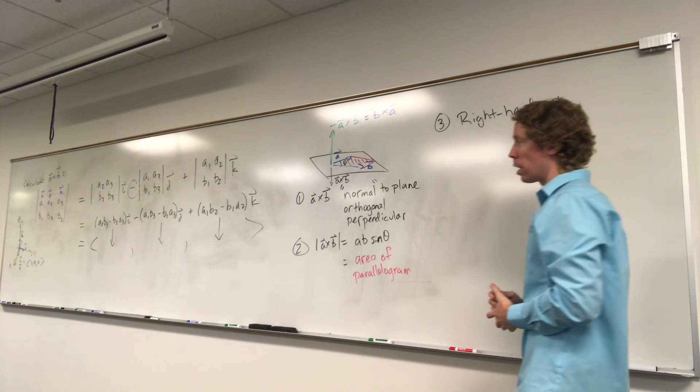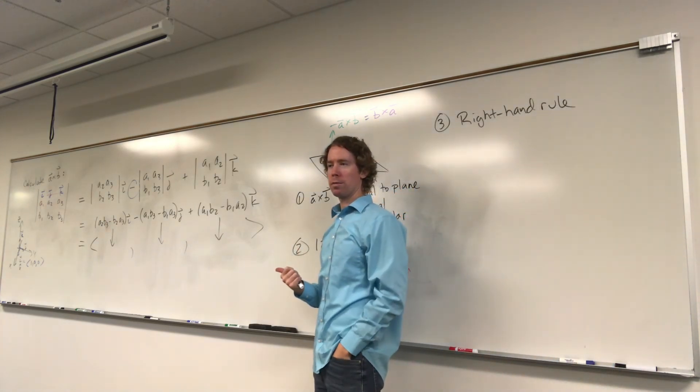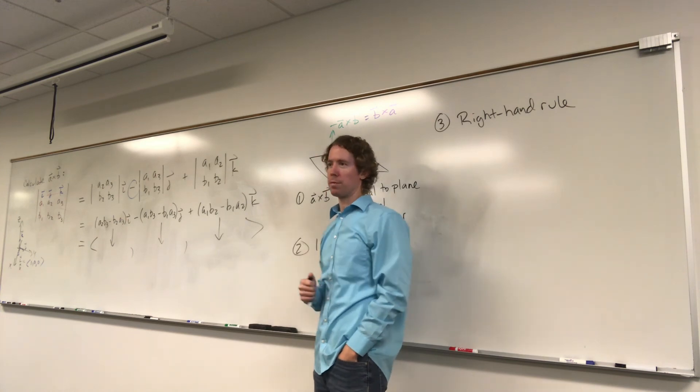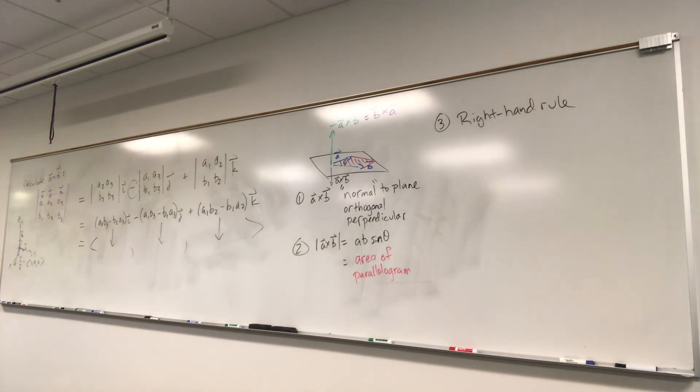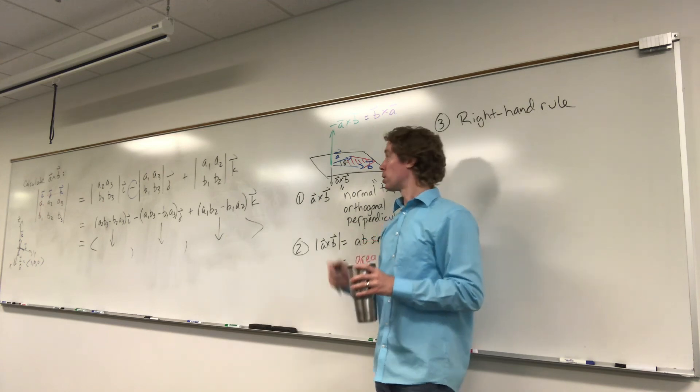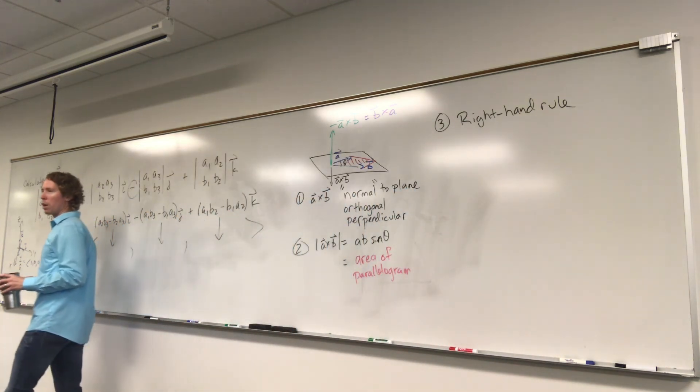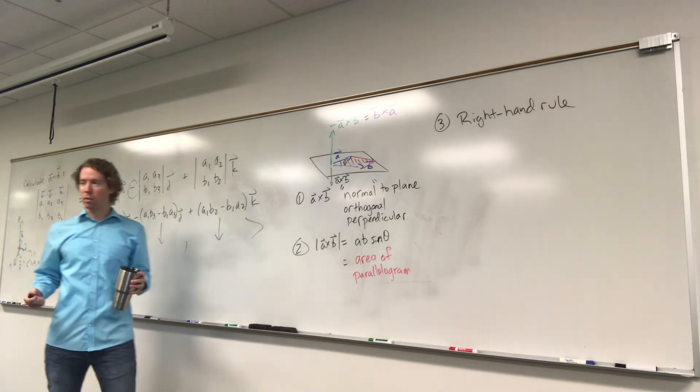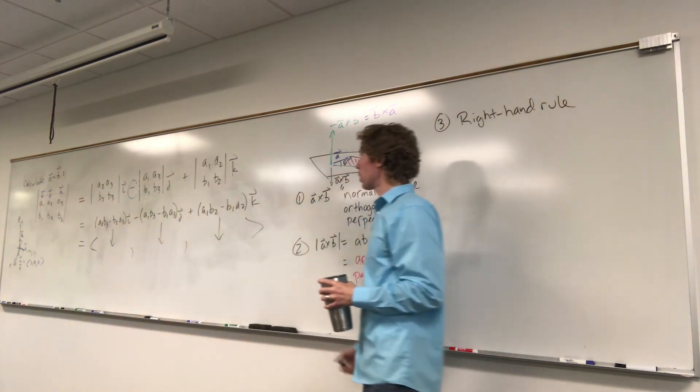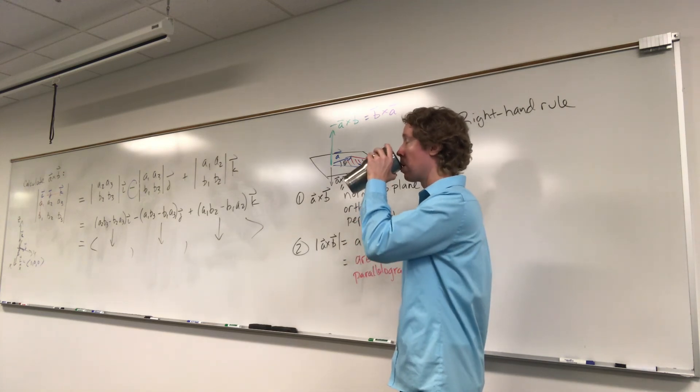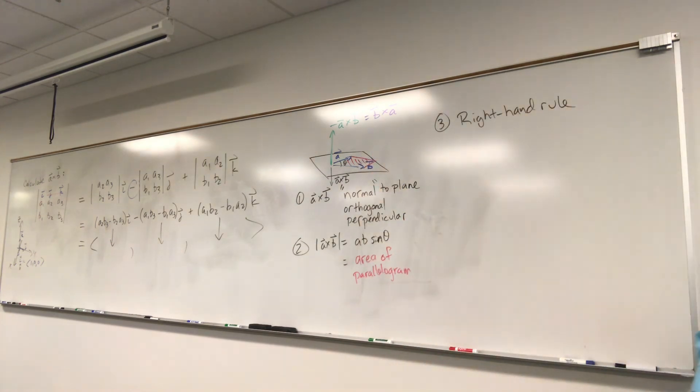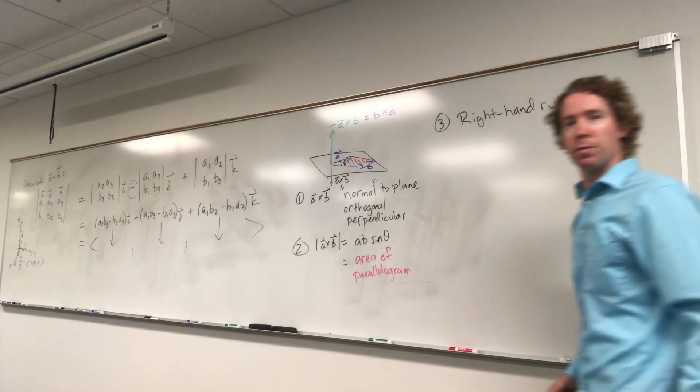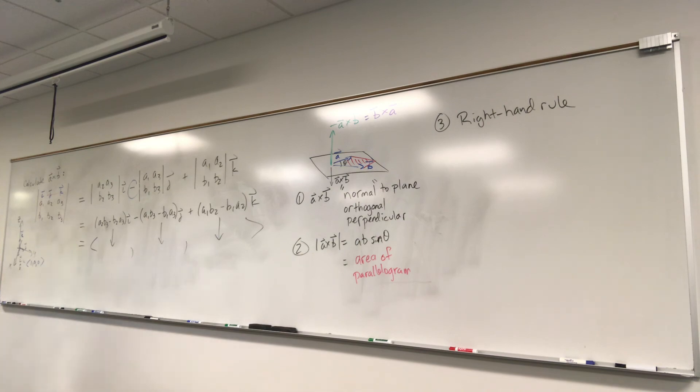Do you guys want to ask any questions right now about dot products or cross products? So the dot product gives you a scalar number? Yes. The cross product gives you another vector? That's right, that's right. So sometimes the dot product is called the scalar product and the cross product is called the vector product. I think those are actually better names for it. I think the dot product and the cross product, they're just based on the conventional symbols and it's not very descriptive. So scalar product and the vector product. Yes sir, can I take a picture? Yeah, yes.